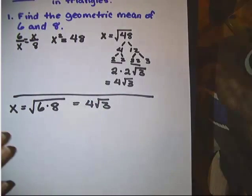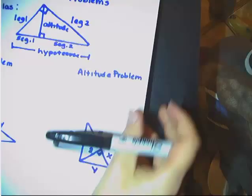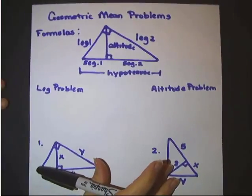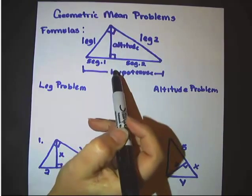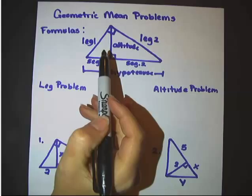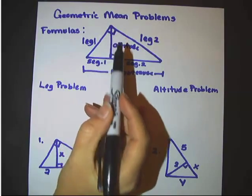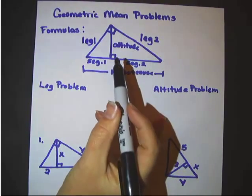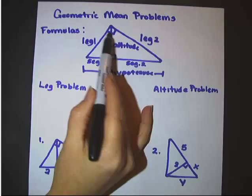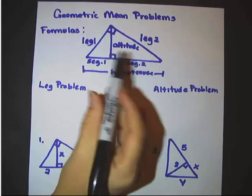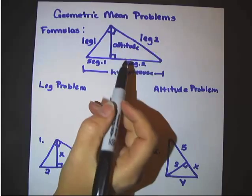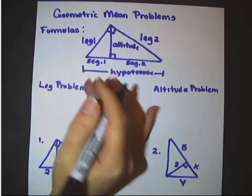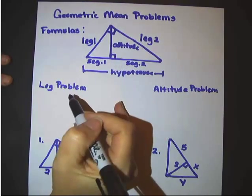In geometry problems, geometric means come up when we have a right triangle with an altitude drawn inside it. This only works in right triangles — that's very important. All three triangles formed — the two smaller ones and the big right triangle — are similar by angle-angle similarity. They all have a right angle and one other common angle. We derived these geometric mean relationships by comparing proportional sides of these three separate triangles, giving us two formulas: the leg problem and the altitude problem.